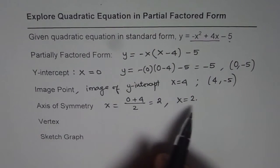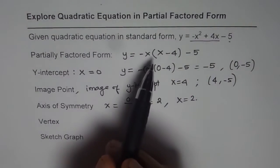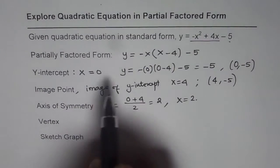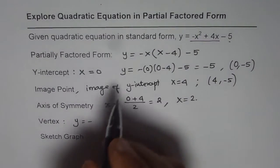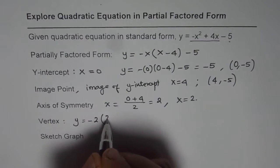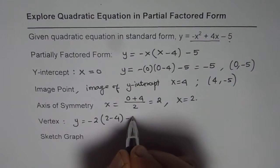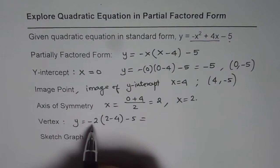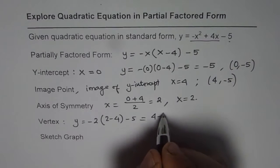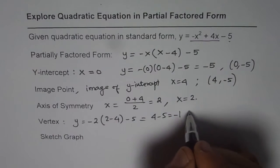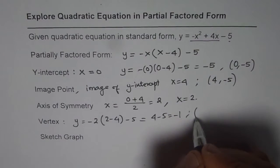Now vertex will always lie on axis of symmetry. So we can substitute 2 in our equation and find the value of y. So vertex should be equals to minus, I am substituting 2 for x. So we get 2 minus 4 minus 5. That gives us minus 2 times minus 2, which is plus 4. Plus 4 minus 5 gives us minus 1. So the vertex is at 2 minus 1.